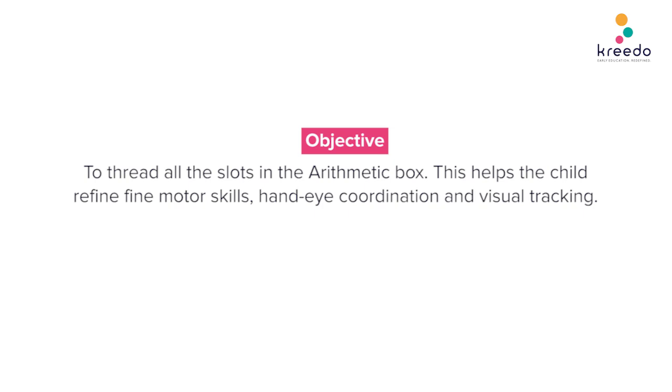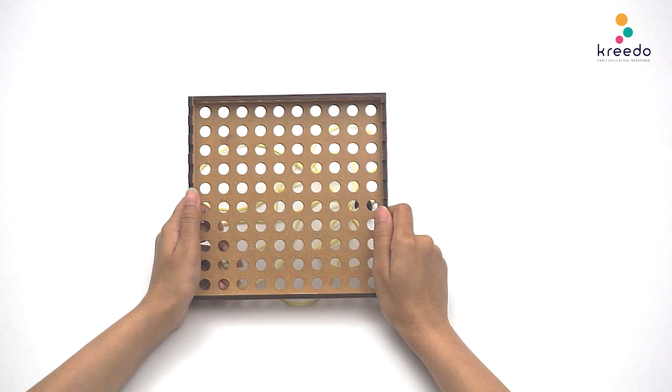Procedure: Place the base of the arithmetic box in front of the child. Hold the base in one hand.